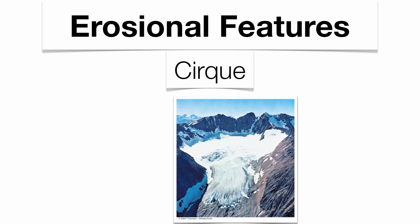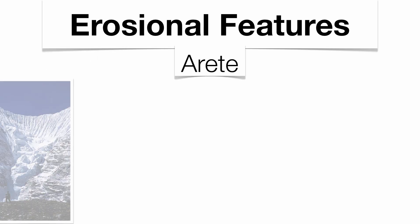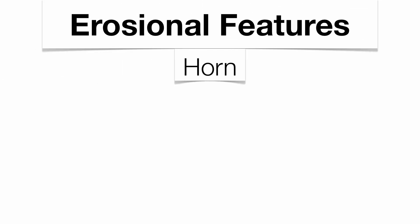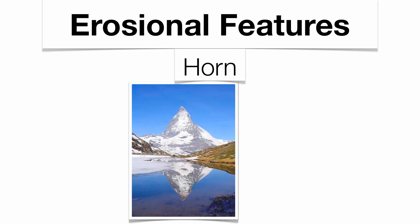Glaciers not only deposit, but they'll also erode as well — they're going to transport sediment to a new location. Some of the erosional features are as follows. You can get cirques, which are bowl-shaped features at the top of mountains where snow builds up. You can also get what are called aretes, which is the rock that separates two cirques. Sometimes you can get multiple cirques on a mountainside, and you get what's called a horn — a very sharp peak on the mountain slope. The most famous is the Matterhorn Peak in Switzerland.